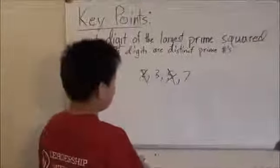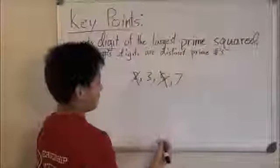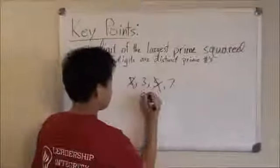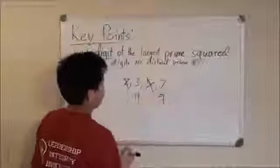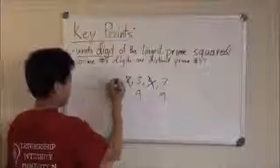And so the only digits we are left with are 3 and 7. And when you square them, the unit's digit of their squares are both 9. So the answer to the problem would be 9.